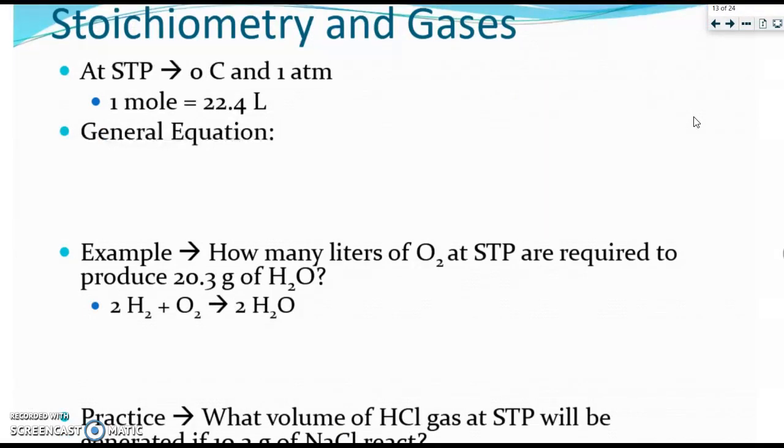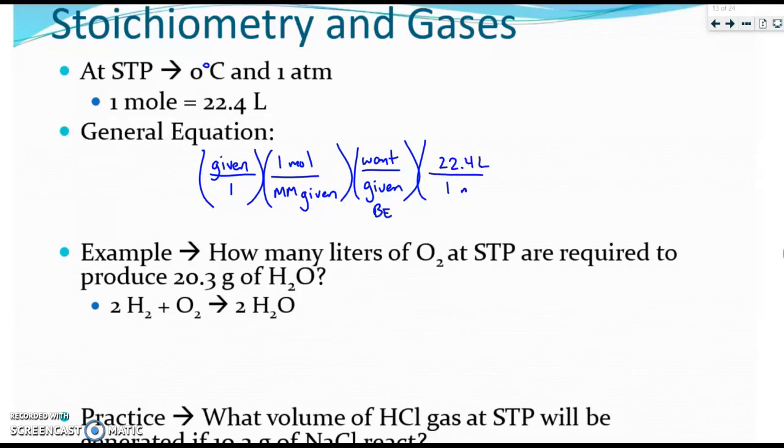Our last gas concept is stoichiometry. STP is 0 degrees Celsius and 1 atm. And 1 mole of gas at STP is 22.4 liters. As always, here is a general equation. It's going to be your given over 1 times 1 mole over the molar mass of the given. Your balanced equation step want over given. And then this time it's always 22.4 liters over 1 mole. So it looks very similar to mass mass.